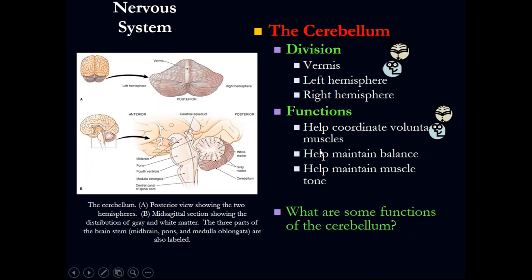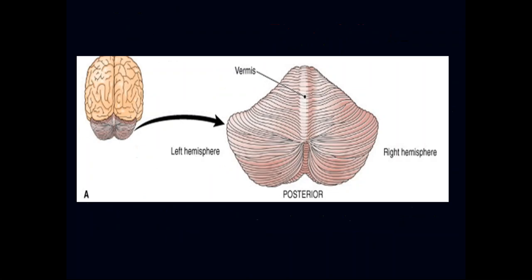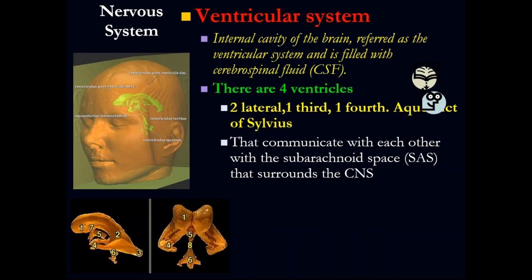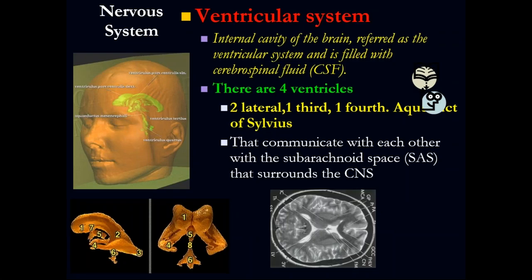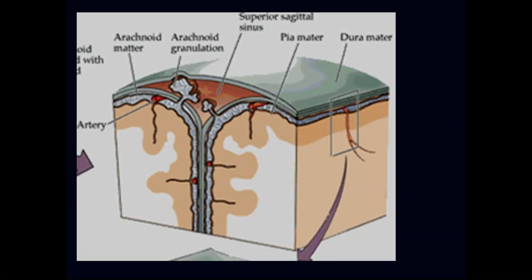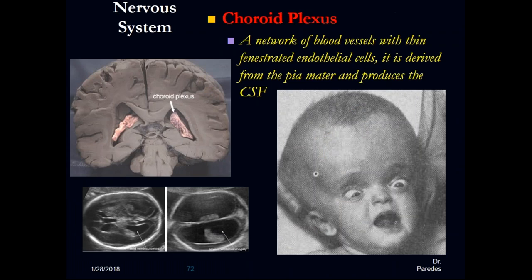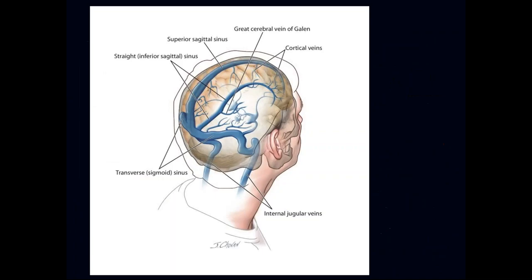The cerebellum's function is coordination, balance, and equilibrium of the body. The ventricular system produces the CSF via the choroid plexus.